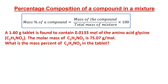Now let me explain the percentage composition of a compound in a mixture. In Topic 1.3, I discussed finding the percentage of an element in a compound, but here we are talking about mixtures. A mixture is composed of two or more compounds. To find the percentage composition of a single compound in a mixture, the formula is: mass of that compound divided by total mass of mixture, multiplied by 100.